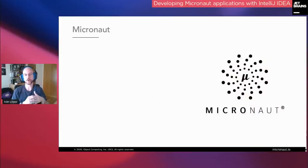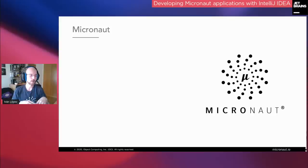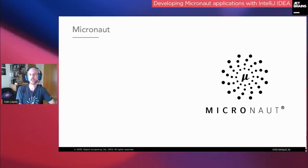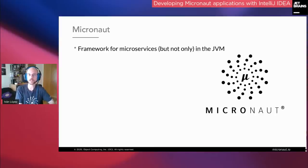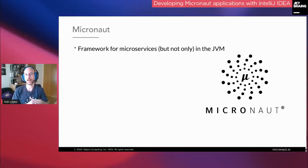Before going live to the IDE, I'll explain in just two slides what Micronaut is, how it works, and a few things so everyone is on the same page. Even if you don't know anything about Micronaut, you can follow the rest of the webinar. Basically, Micronaut is a new framework for microservices — not only microservices — for the JVM. Graham Rosset created the framework, and you may know him because he also created Grails.